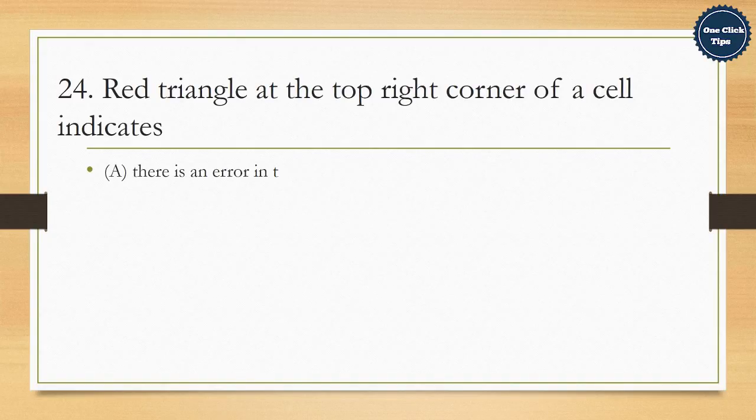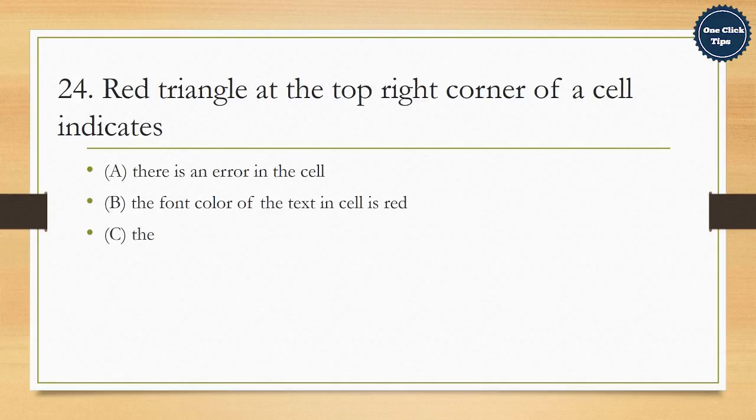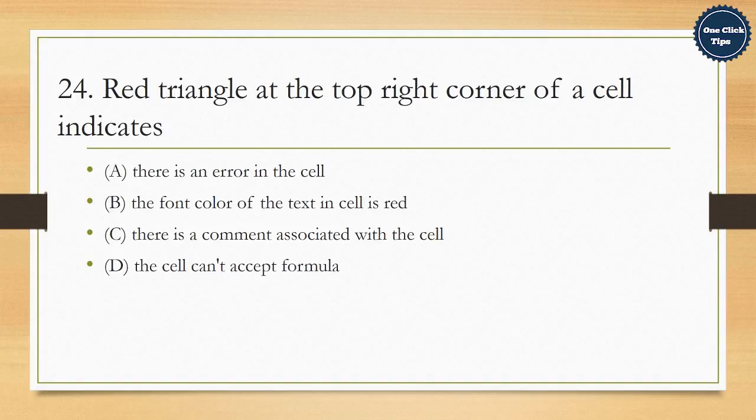24. Red triangle at the top right corner of a cell indicates A. There is an error in the cell, B. The font color of the text in cell is red, C. There is a comment associated with the cell, D. The cell can't accept formula. The correct answer is C. There is a comment associated with the cell.